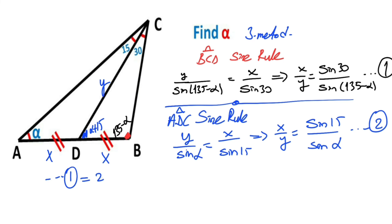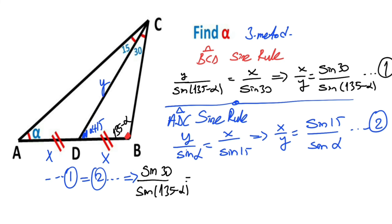If we equalize the first and second equations: sine 30 over sine(135 minus alpha) equals sine 15 over sine alpha.